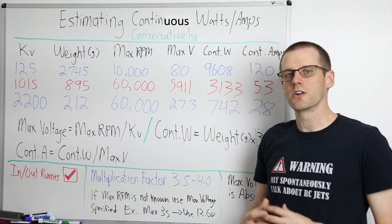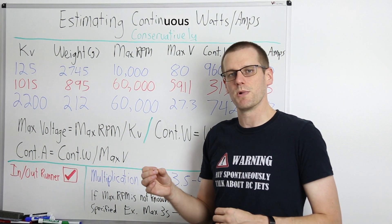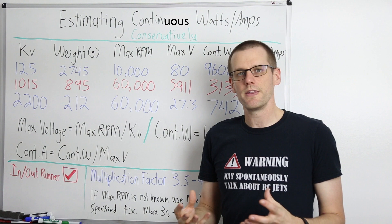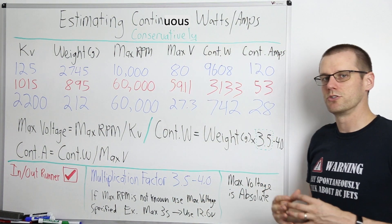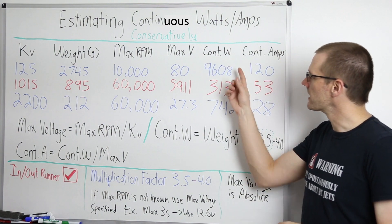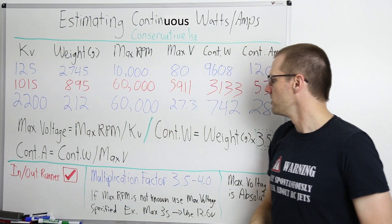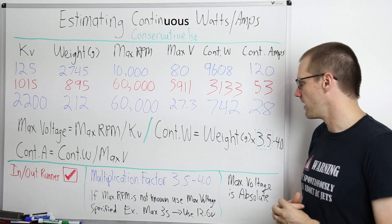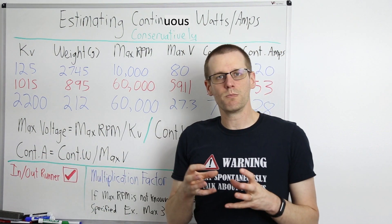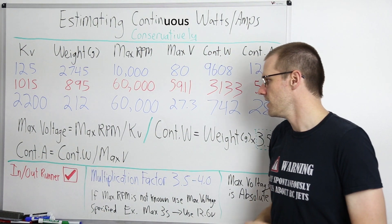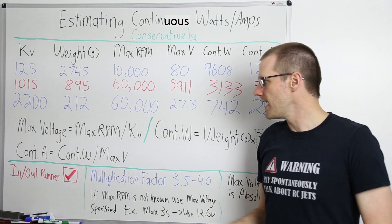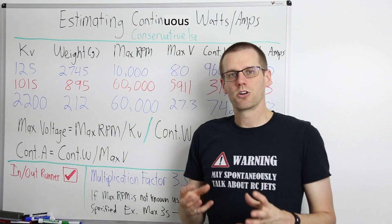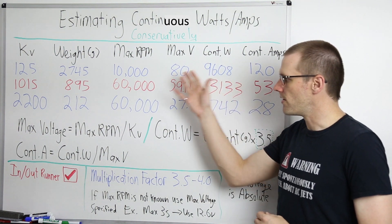Next we calculate continuous wattage. This works by using a multiplication factor — you take the weight of the motor in grams and multiply by a value of 3.5 to 4.0 to get continuous wattage. So for this motor: 2,745 grams multiplied by 3.5 gives us 9,608 watts. Lastly, continuous current comes from the two calculations we just made — divide the continuous wattage by the maximum voltage, and that gives you the continuous current you can deliver using that motor.